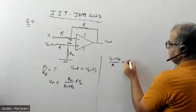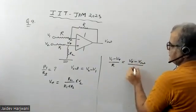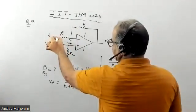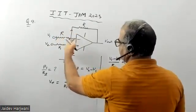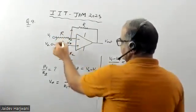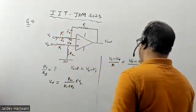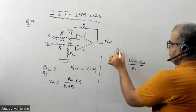V+ minus V output divided by R. The current coming from here, there is no current going into the negative terminal of the op-amp, so whatever current is coming from here, that's I1, will equal this current I2.